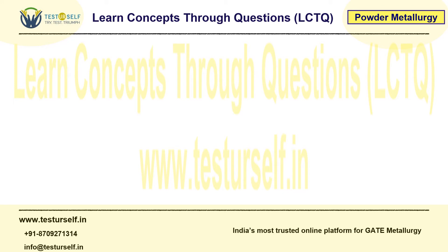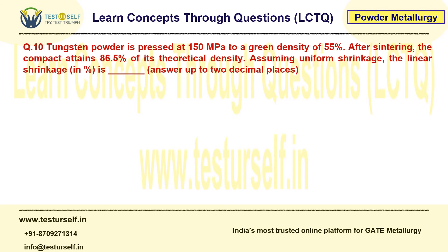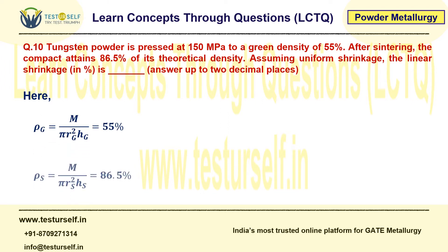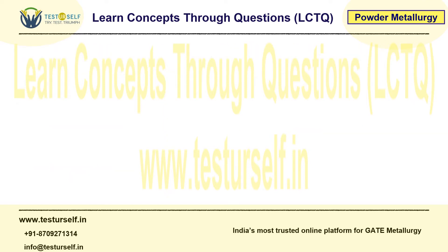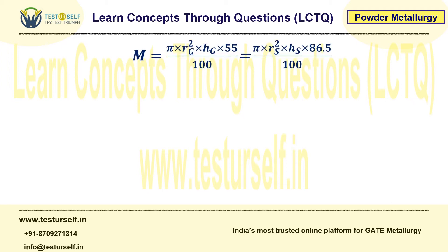Now, re-reading the question: they have given green density as 55% and the compact attains 86.5% of its theoretical density after sintering — that is the sintered or achieved theoretical density. We denote green density with subscript G and sintered density with subscript S. We have to find percentage linear shrinkage, which is change in length upon original length. Since mass remains the same in both the green and sintered compact, we can compare the two masses, cancel out pi/100, and coin a new equation: R_S² × H_S upon R_G² × H_G = 55 / 86.5 = 0.6358.